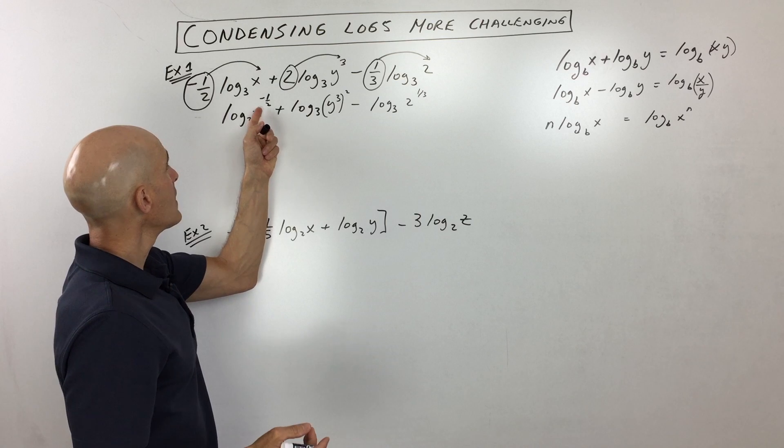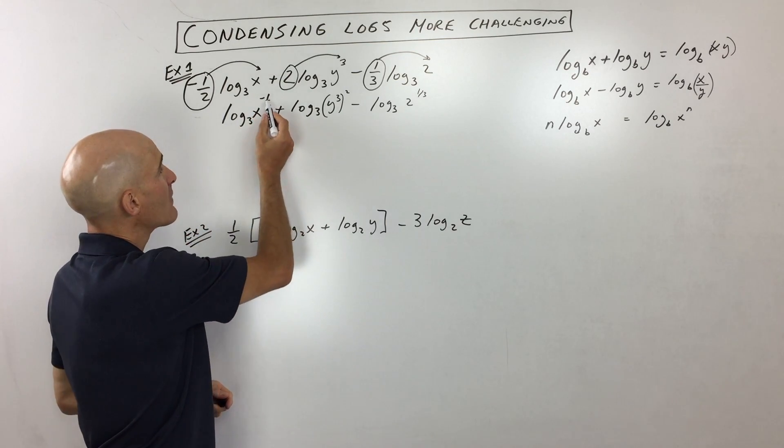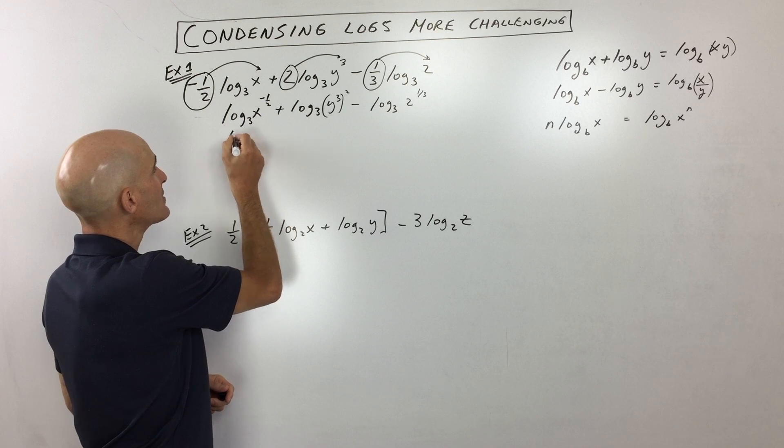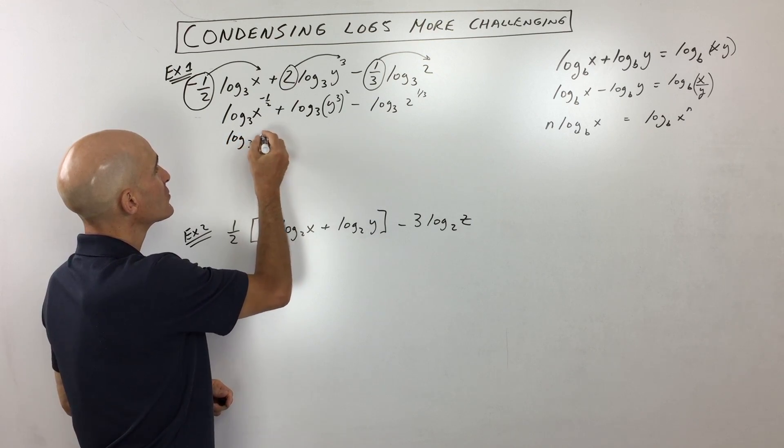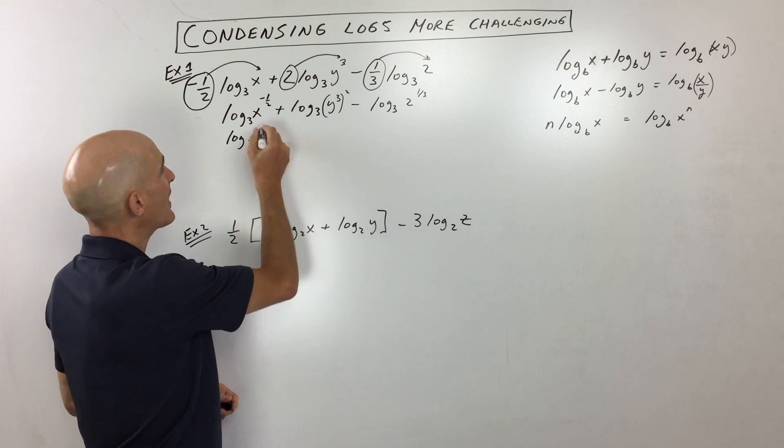Now just to simplify a little bit more, when you have a negative exponent, that tells you to take the reciprocal. And remember the 1 half power is actually the square root, so this is actually going to be log base 3 of 1 over the square root of x.